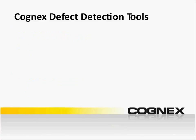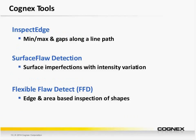With that, let's talk about some of these tools. At a high level, InspectEdge and its subset of tools — InspectEdge for Defect, InspectEdge for Width, and InspectEdge for Features — inspect defects along a line path. Surface Flaw Detection can inspect for surface imperfections with intensity variation. And finally, Flexible Flaw Detect performs edge and area-based inspection of shapes.